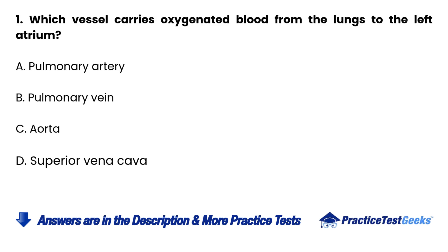Question 1. Which vessel carries oxygenated blood from the lungs to the left atrium? A. Pulmonary artery. B. Pulmonary vein. C. Aorta. D. Superior vena cava.